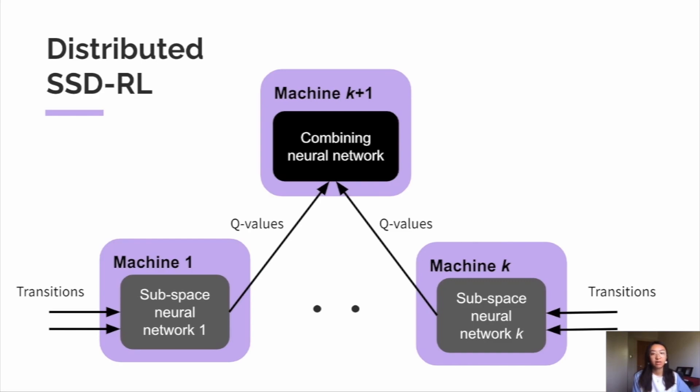Secondly, we are able to carry out deep reinforcement learning in a distributed system as we split up our training into multiple disjoint neural networks. This way, the training for each subspace network can be carried out on separate machines, and there's no need to gather training data at a centralized location.